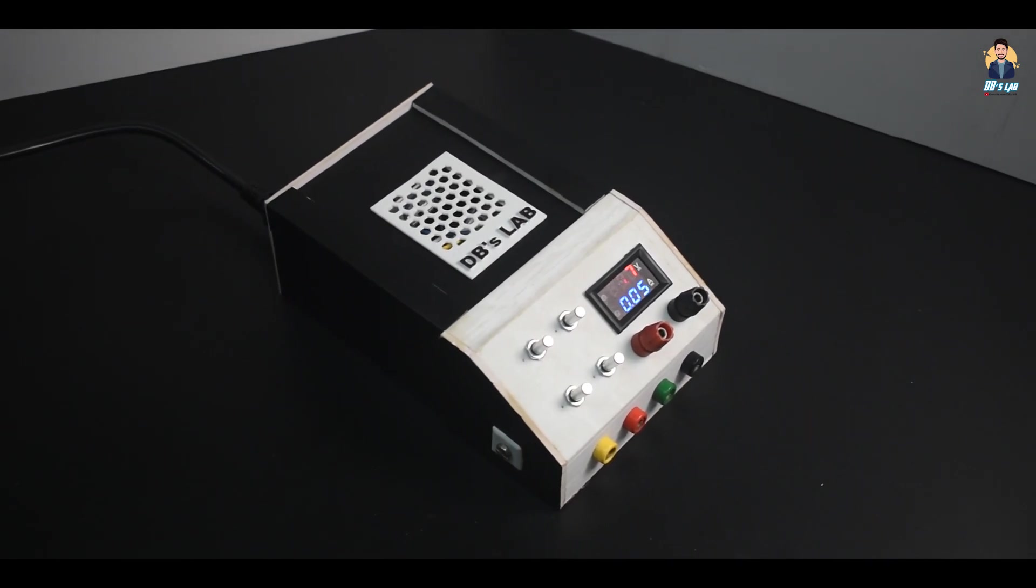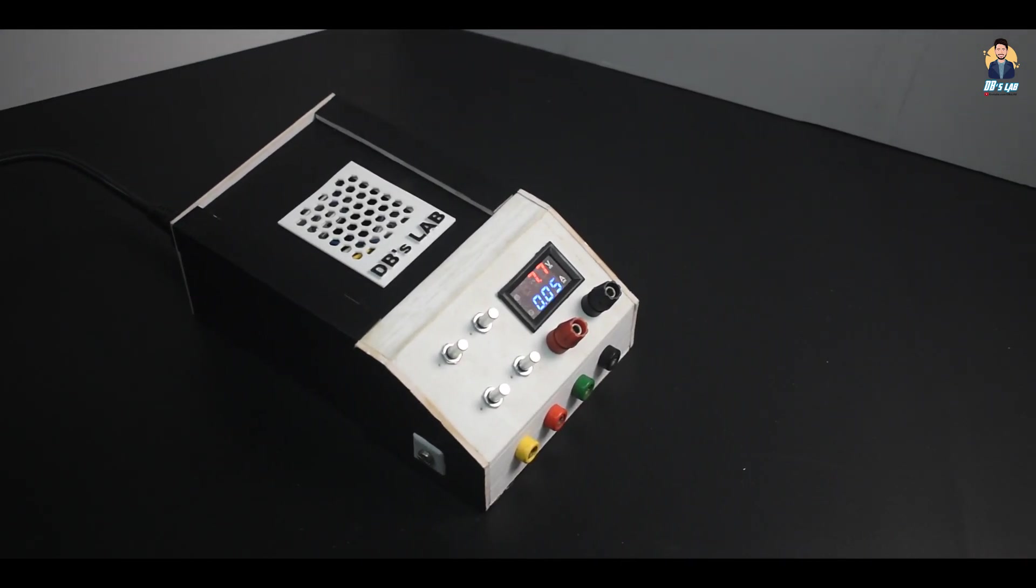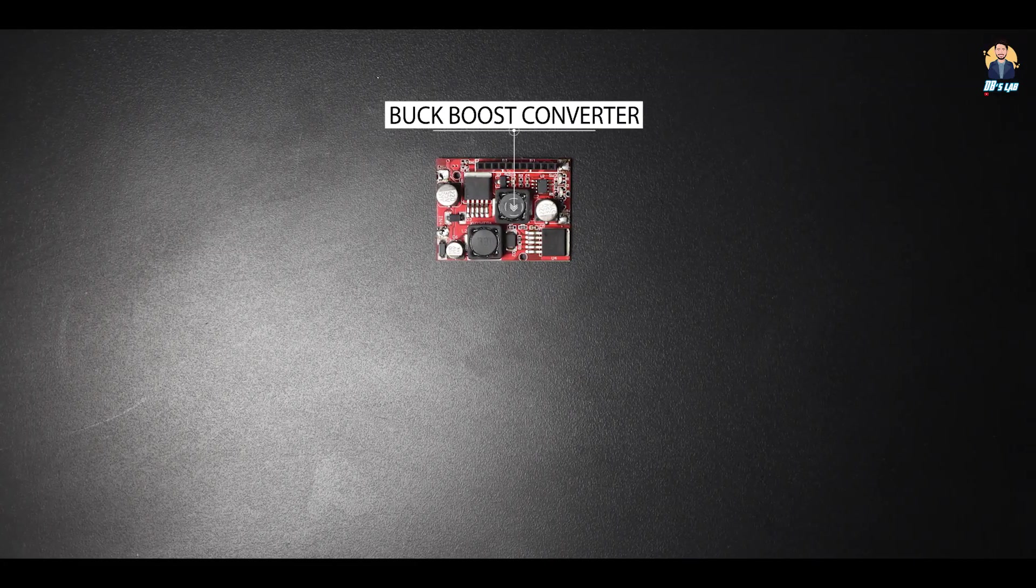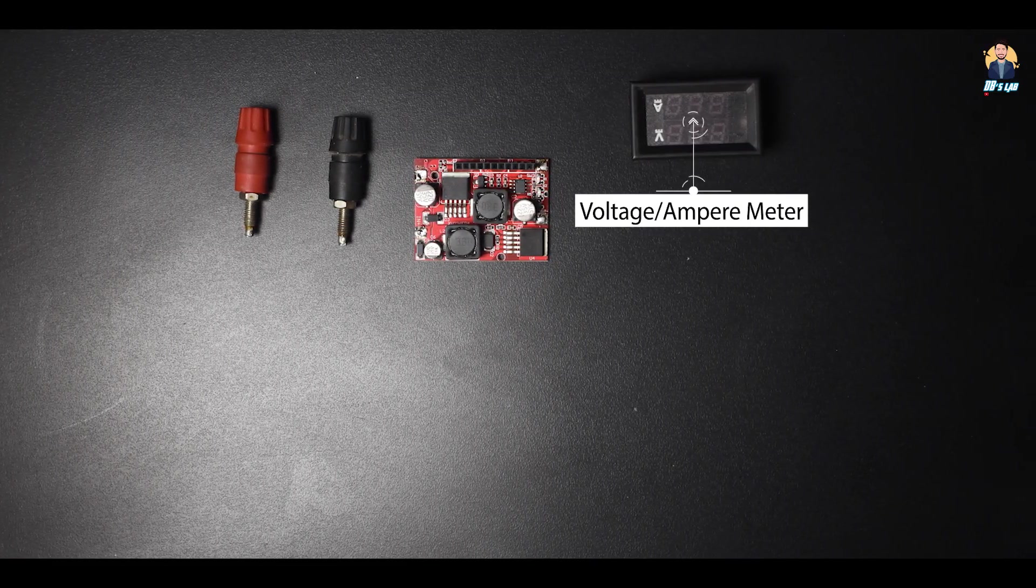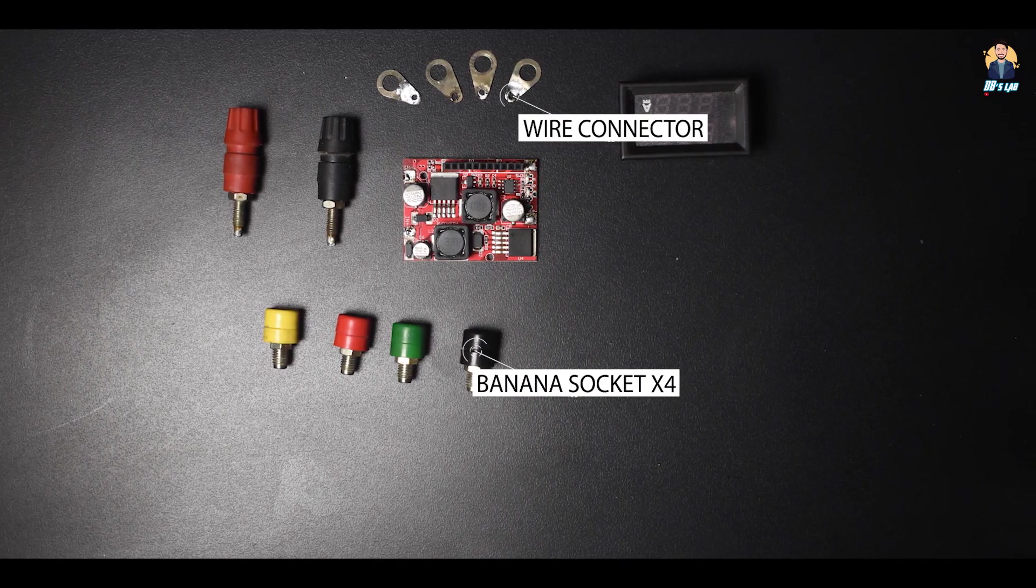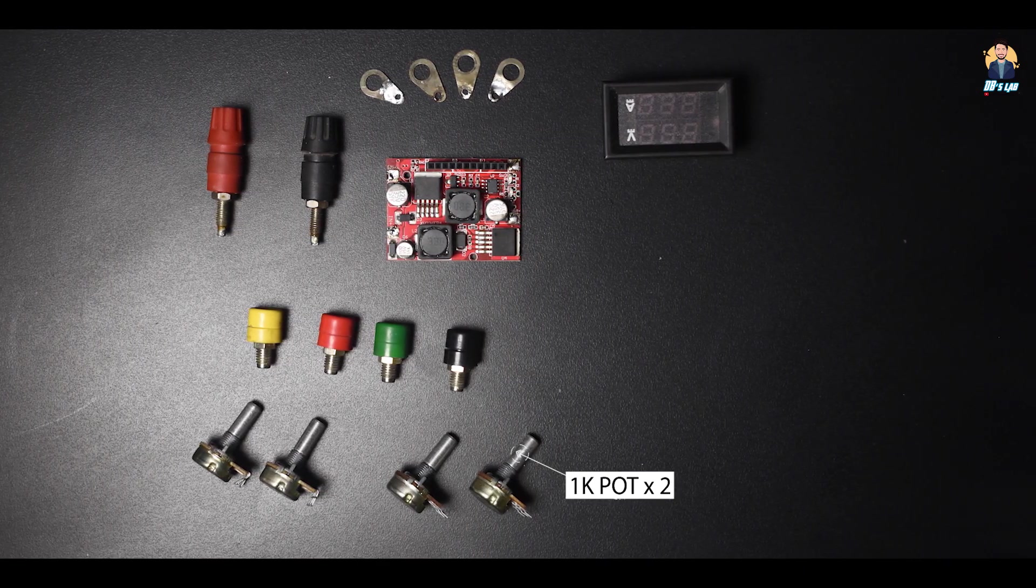And here is a list of components you will need. You will need a buck boost converter, few binding posts, a volt amp meter, banana socket, 10k pot, 1k pot, and knobs for the pots.